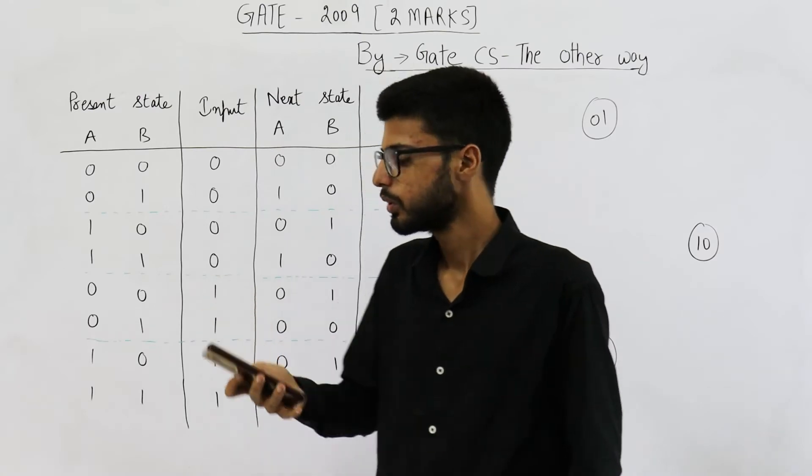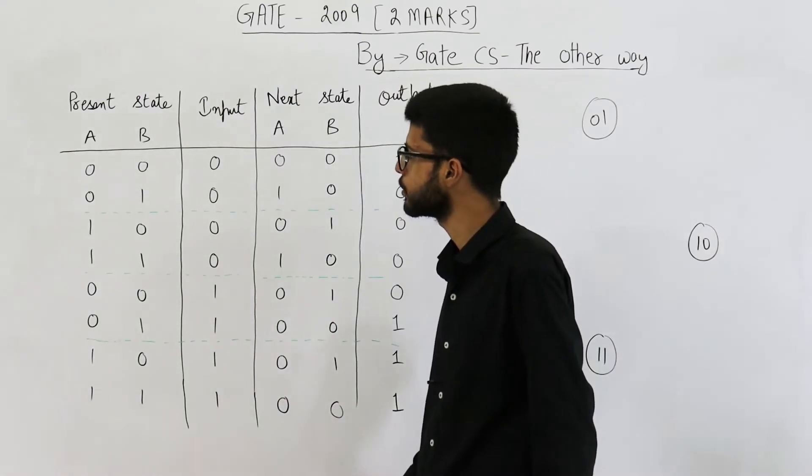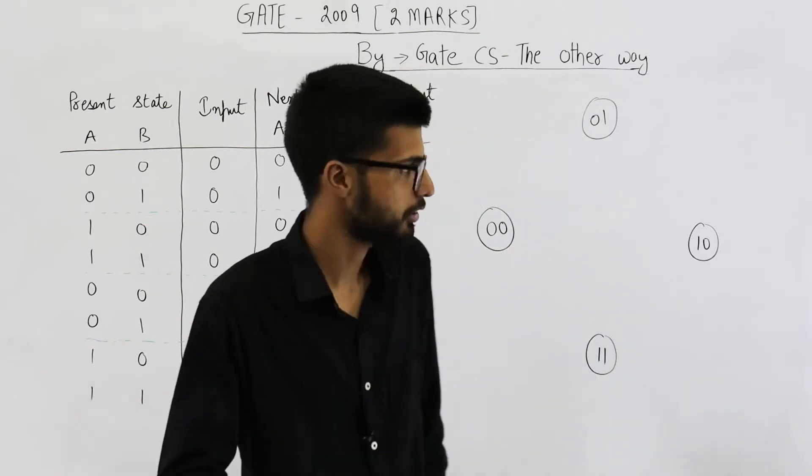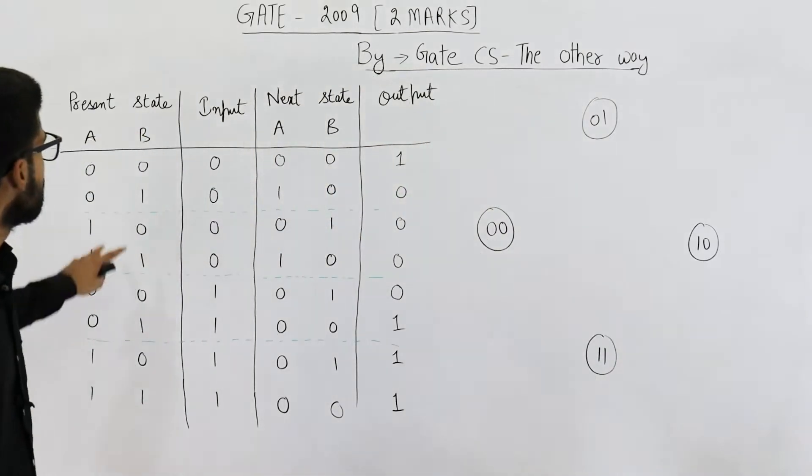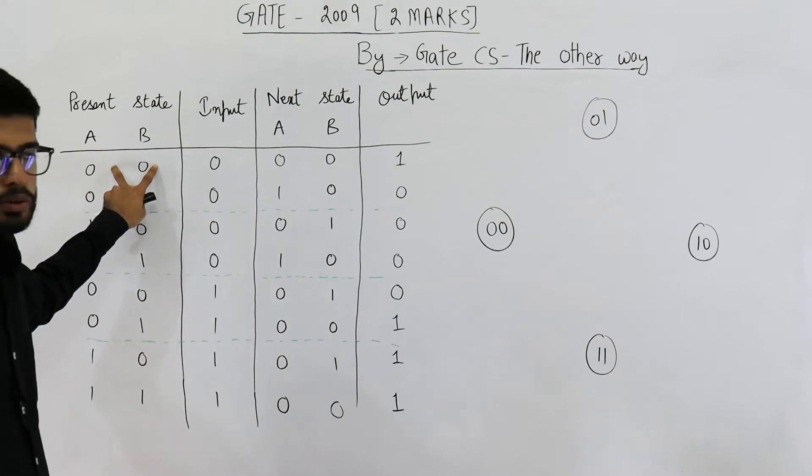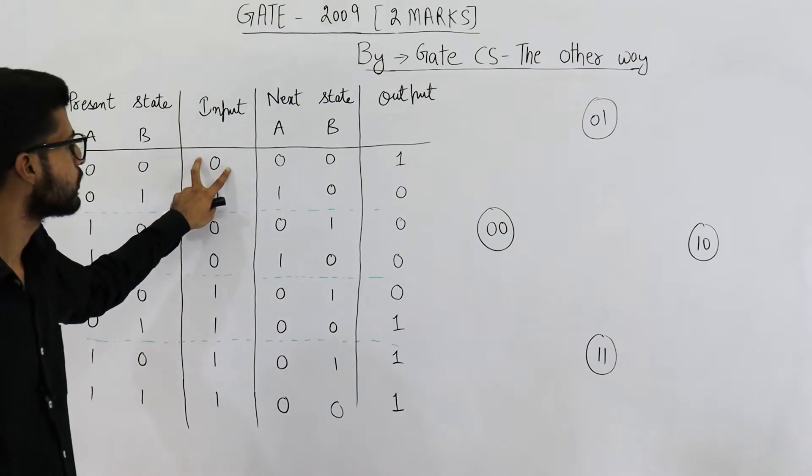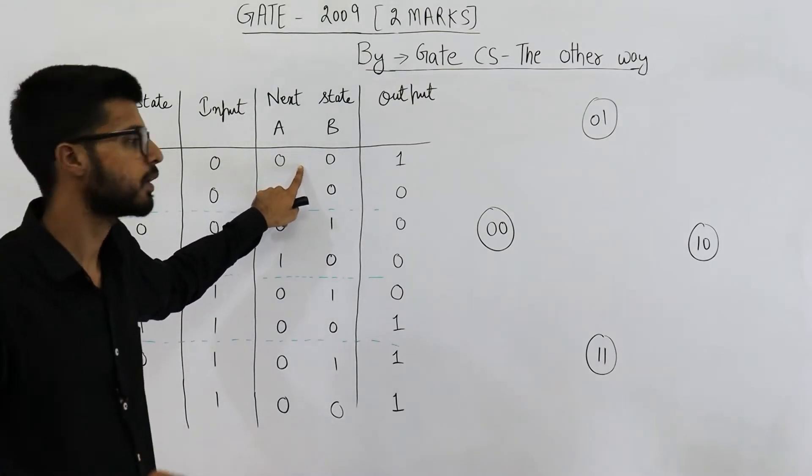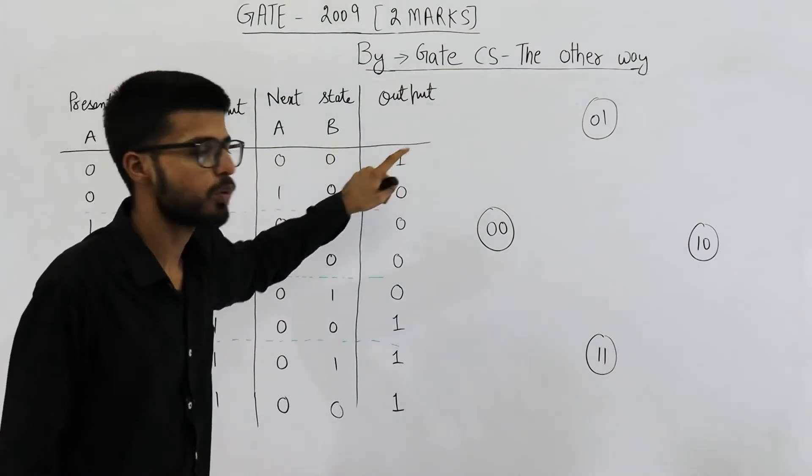So they have given you the state transition diagram of a FSM. FSM means finite state machine. This machine, if it's currently on state 0,0 and the input is 0, it will go to state 0,0 only. That means we'll remain on that state only, but output will be 1.